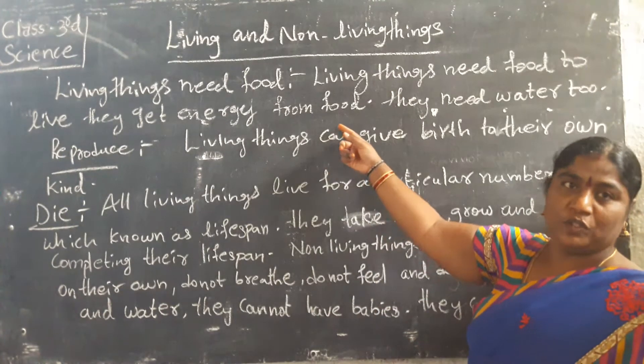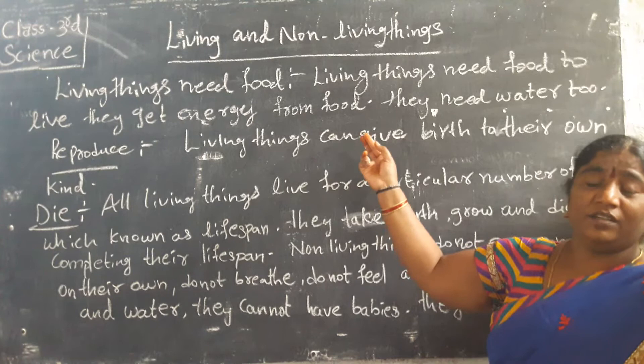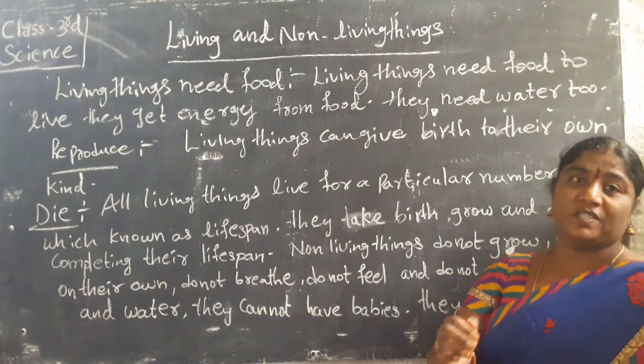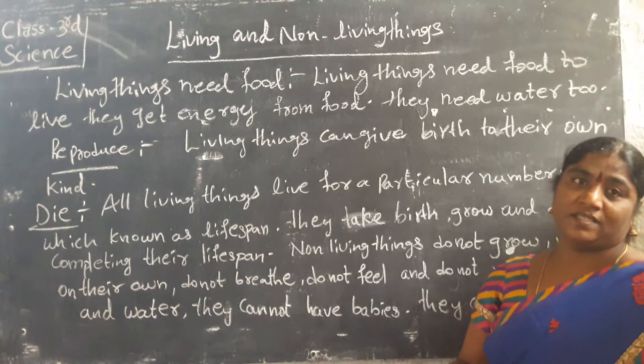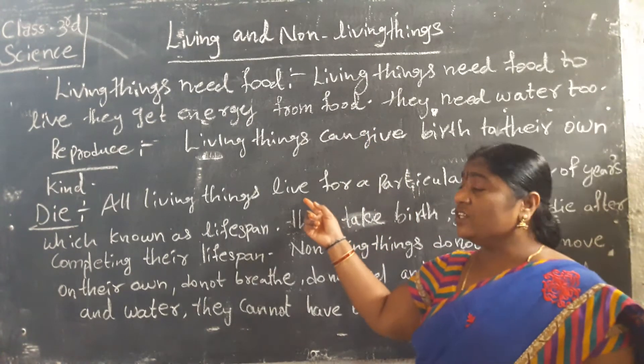That is called reproduce. The animals also give birth to young ones — small babies: dogs, cats, and so on.